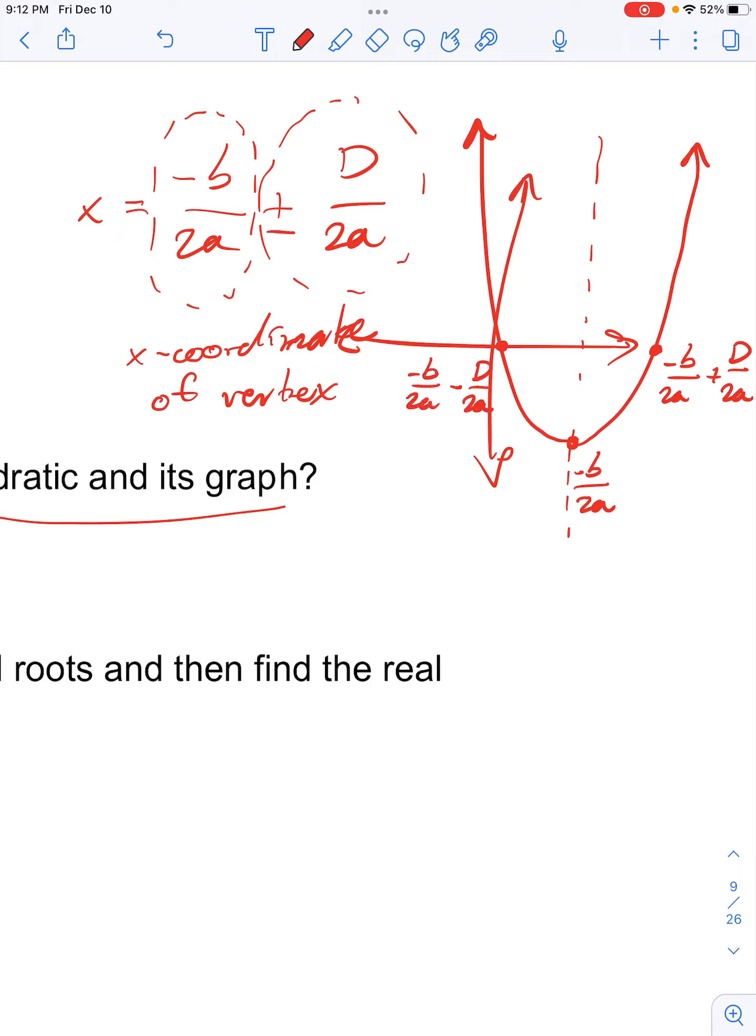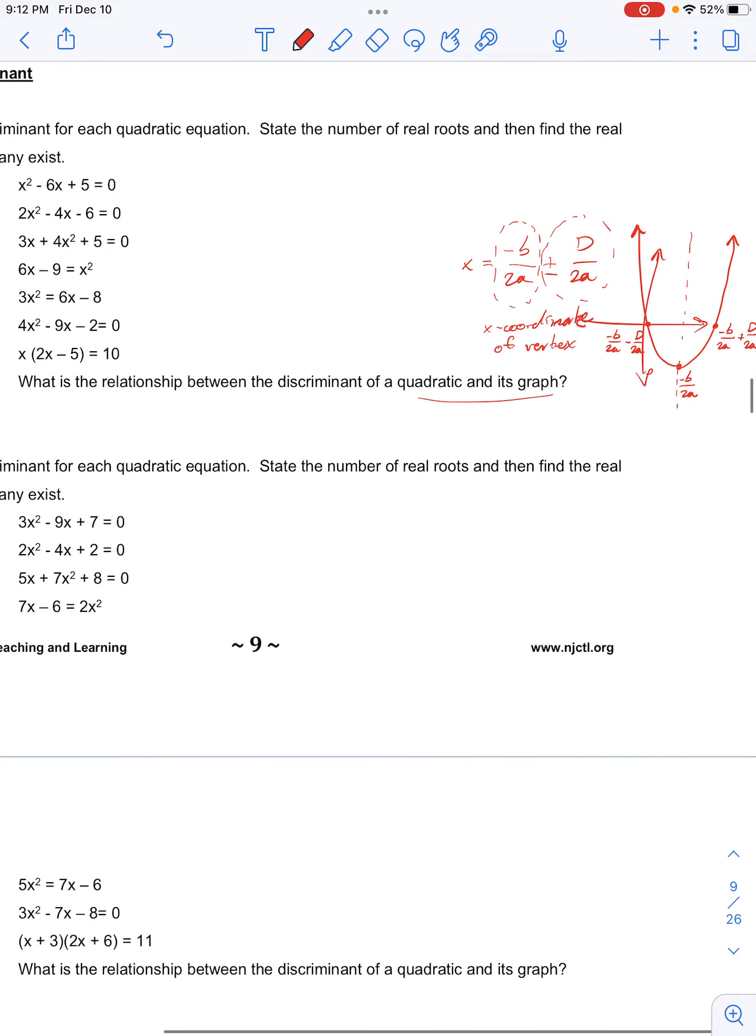And so, the relationship between the discriminant and the graph yields how many real roots the graph contains.